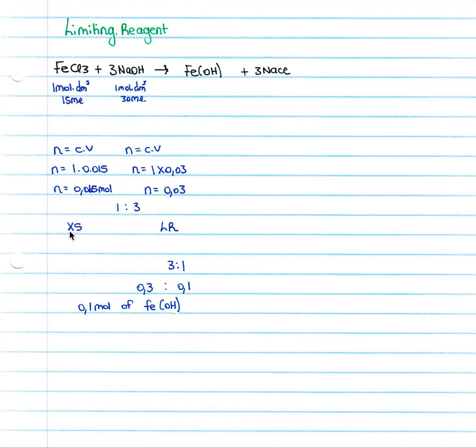Then we simply use our ratios. Now we work with our limiting reagent being NaOH and we want to work out how much Fe(OH)3 we will form. We use mole ratios, we have three to one, so we go three to one.